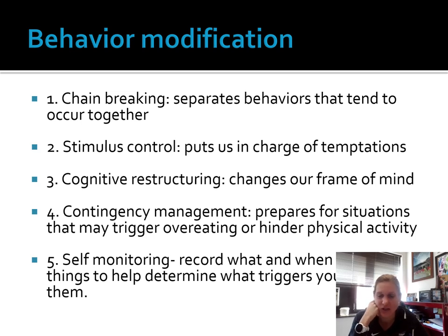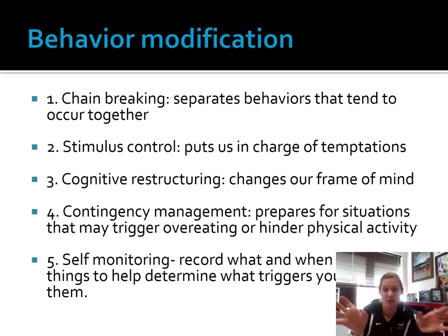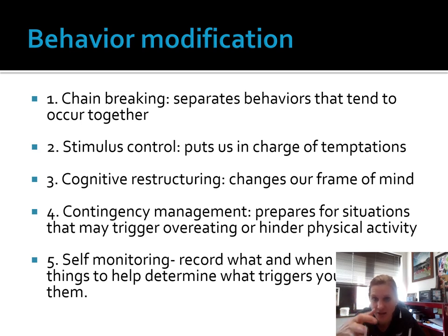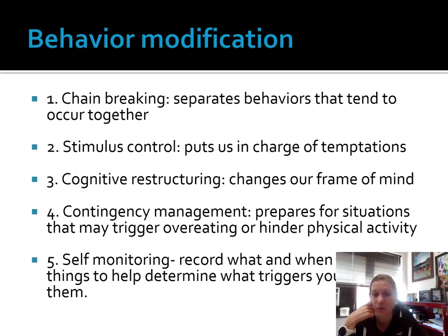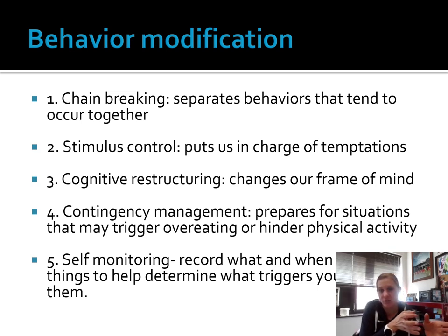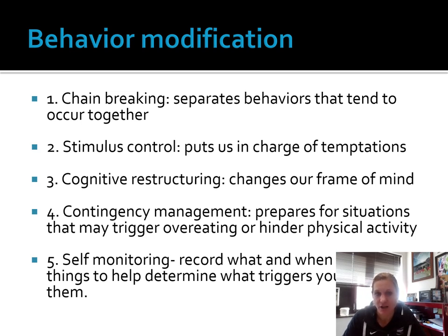When thinking about behavior modification, first is chain breaking — separating behaviors that tend to occur together. So if I drink, I'm going to eat unhealthy food — how can I separate those two things? Stimulus control — put us in charge of our temptation, maybe limit ourselves to a certain number of times per week. Cognitive restructuring — change your frame of mind, think about how you want to approach this situation differently. Contingency management — prepare for situations that may trigger overeating or hinder physical activity. Self-monitoring — record what's going on, when did you make these decisions, and then limit those particular triggers.